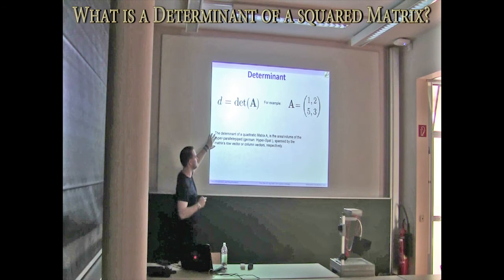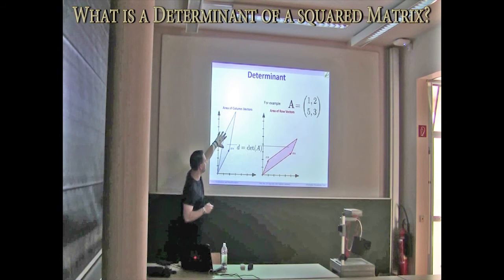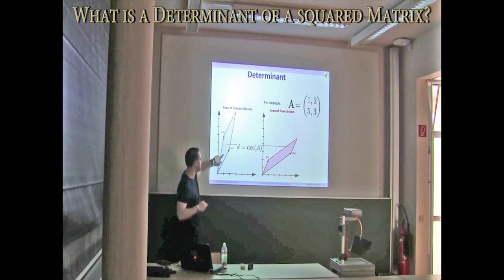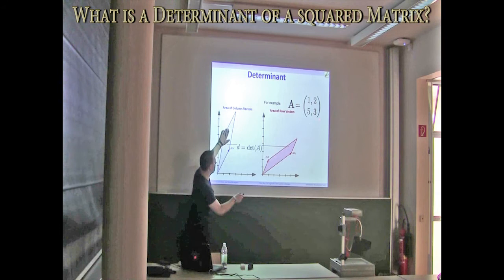Okay, here's a very complicated definition. Let's just say the determinant, when you consider the column and the row vectors, you get a very interesting area spanned by the row vectors, and the determinant is exactly the measure of this area. So, when you consider here the one and the five, and two and three, then you span a certain area, and this is the determinant.